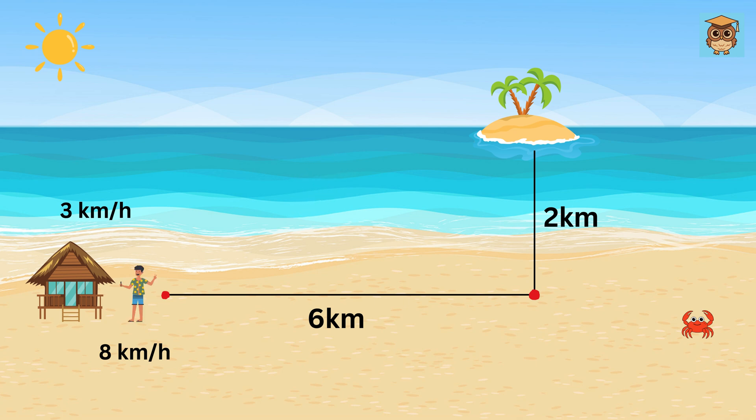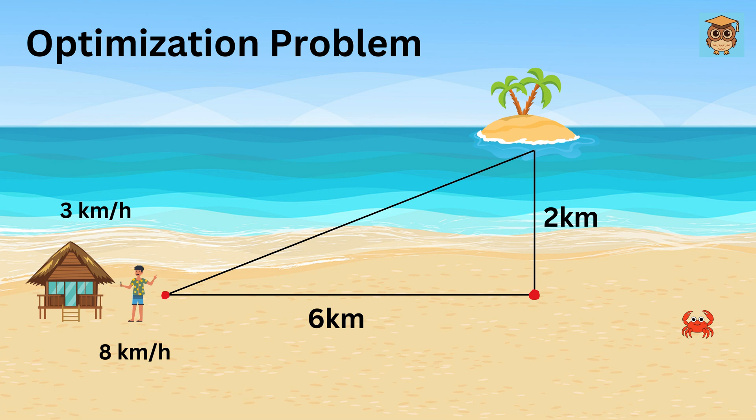The question is, how should Alex travel to reach the island as quickly as possible? Should he swim directly like this because this seems to be the minimum length? Or should he run to this spot and then swim because his swimming speed is less than his running speed, and therefore he should swim as little as possible? Or should he run part of the way along the beach and then swim? This is an optimization problem because it involves finding the best combination of running and swimming distances to achieve the fastest route.